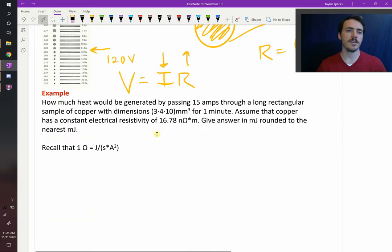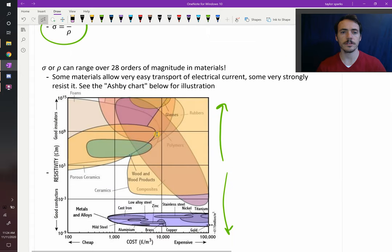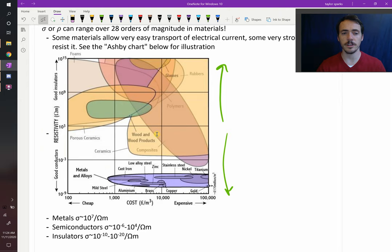Let's do a quick example. How much heat would be generated if you passed 15 amps through a long rectangular sample of copper with dimensions given, basically like a matchstick, for one minute? You can assume that copper has a constant electrical resistivity of 16.78 nano ohms per meter. Give your answer in millijoules rounded to the nearest millijoule. This is interesting. Copper is one of your very best conductors.